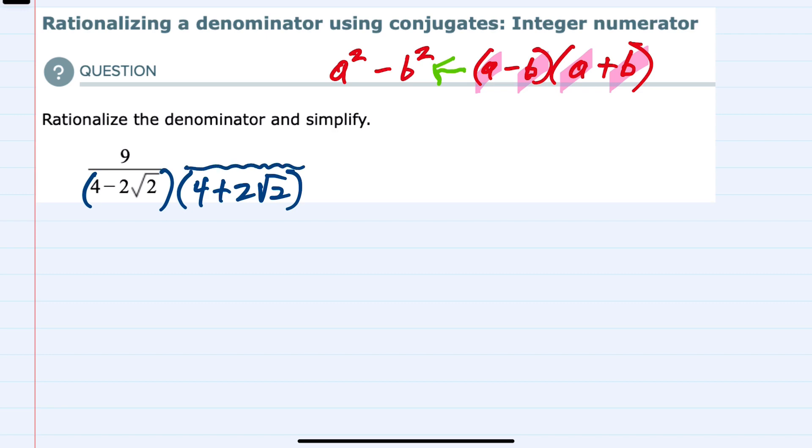as long as I also multiply the top by the same expression. So multiplying the top and bottom both by 4 plus 2 square roots of 2 is like multiplying by 1, so I'm not actually changing the fraction.